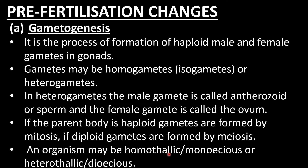An organism may be homothalic/monoecious (bisexual) or heterothalic/dioecious (unisexual). Bisexual means both male and female reproductive organs are present in the same organism. Unisexual means only one reproductive organ is present, either male or female. The bisexual condition is called homothalic or monoecious, and the unisexual condition is heterothalic or dioecious.